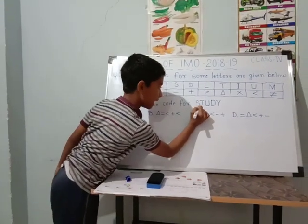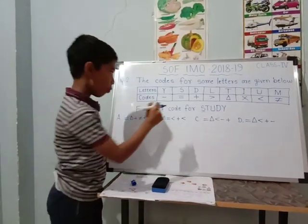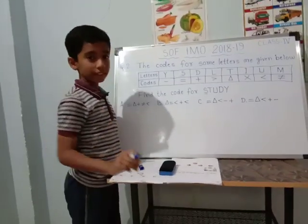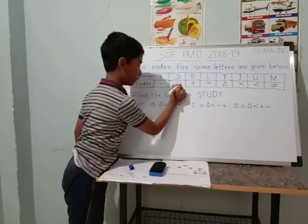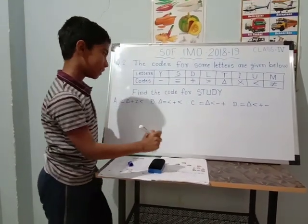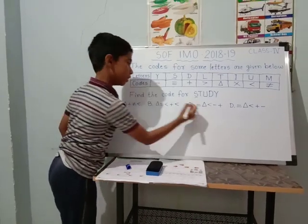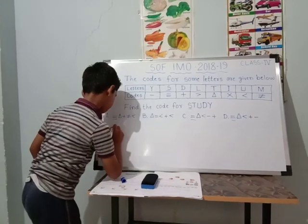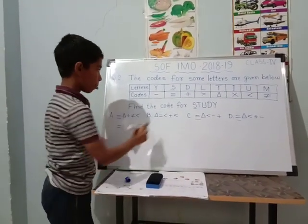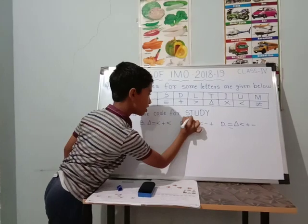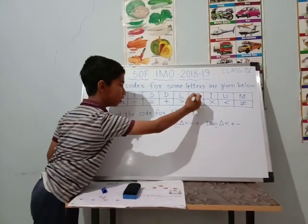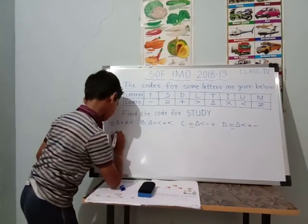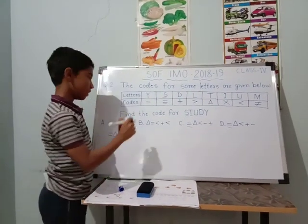The first letter is S. We have to see where S is in this box — S is here, and its code is equals sign. The code for S is equals. Then the next letter is T. T is here, and the code for T is a triangle. Make a triangle here.